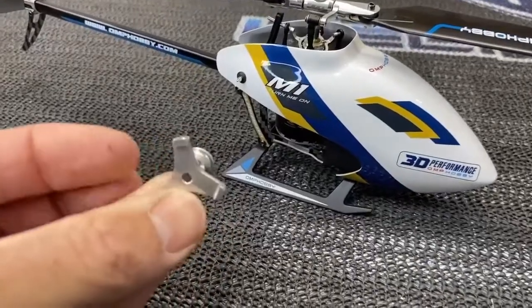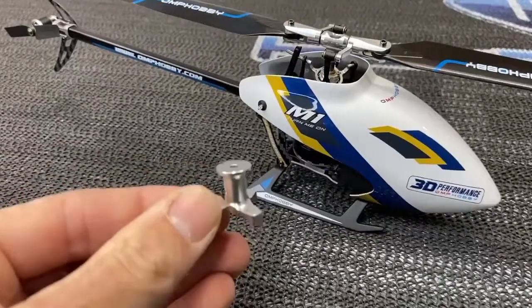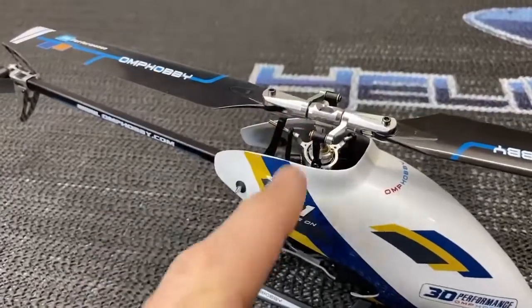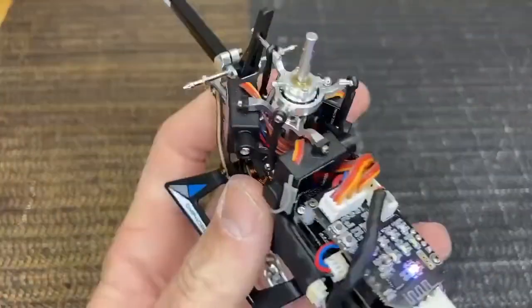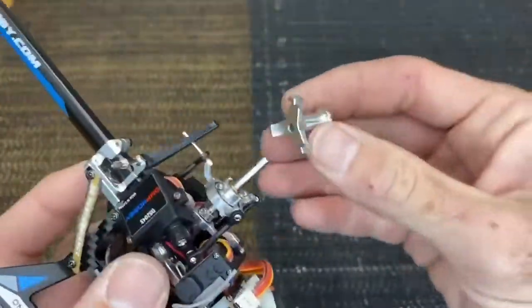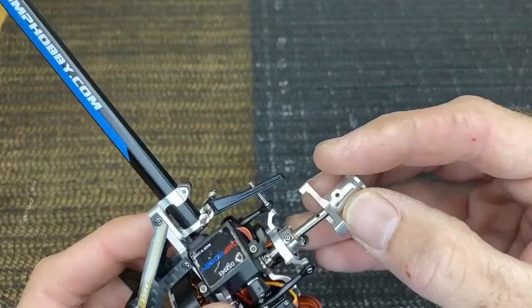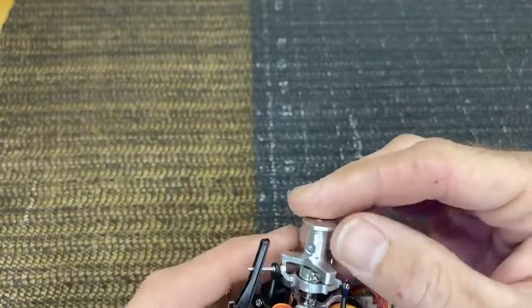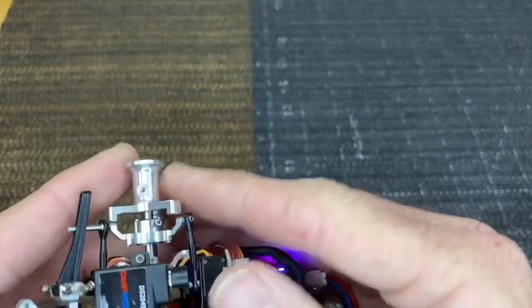How to use your OMP Hobby M1 swashplate leveler. Step one: remove the canopy and head. Once your head is completely removed, take your swashplate leveler and drop it down.